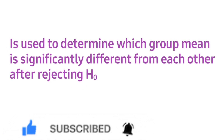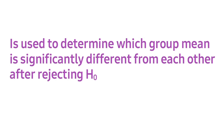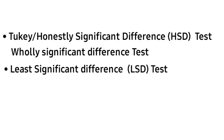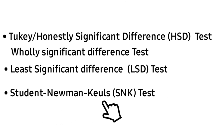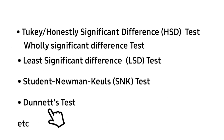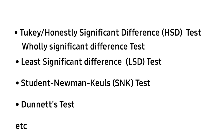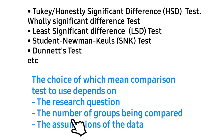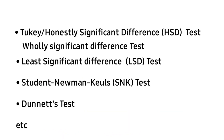The various types of mean comparison tests associated with one-way ANOVA are: the Tukey test, also known as the Honestly Significant Difference (HSD) test; the Least Significant Difference test; the Student-Newman-Keuls test; the Dunn's test; and other mean comparison tests. The choice of which test to use depends on the research question, the number of groups being compared, and the assumptions of the data.